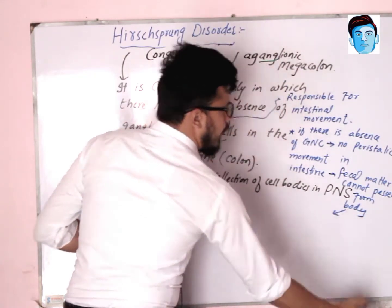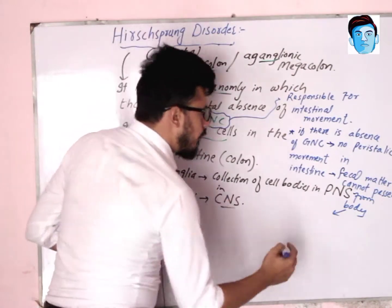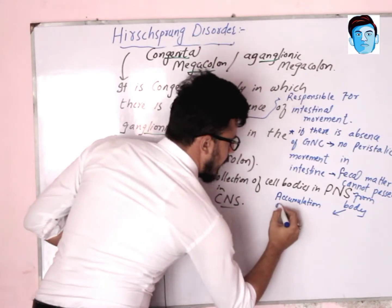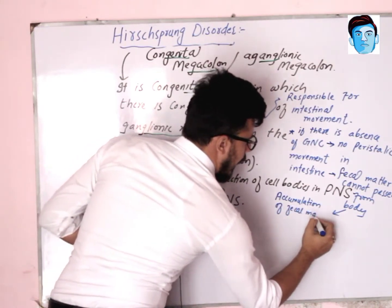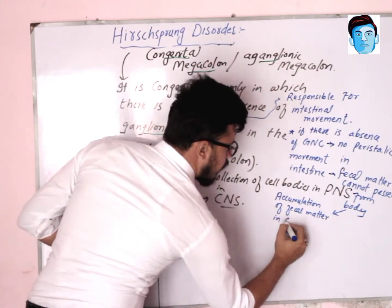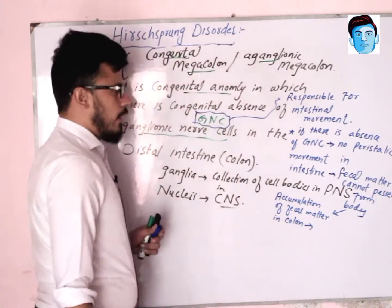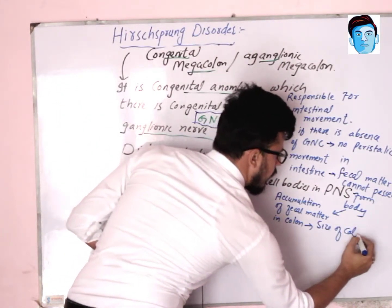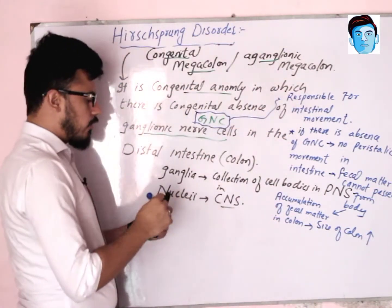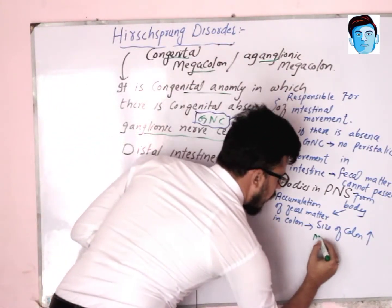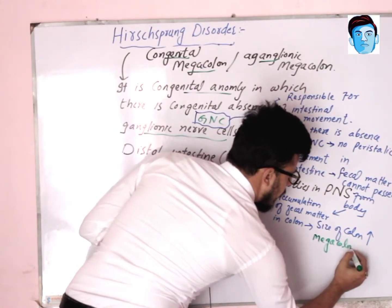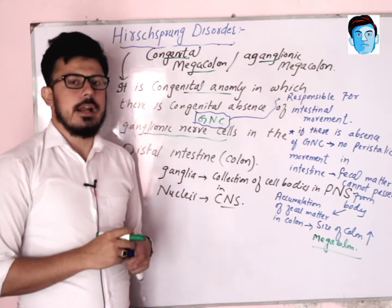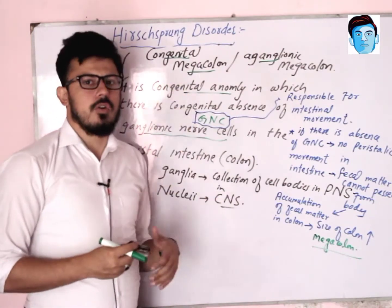As a result, there is accumulation of fecal matter in the large intestine, mainly in the colon, leading to the increased size of the colon. When there is increased size of the colon, that is called megacolon, and that's why the disease is called congenital megacolon.